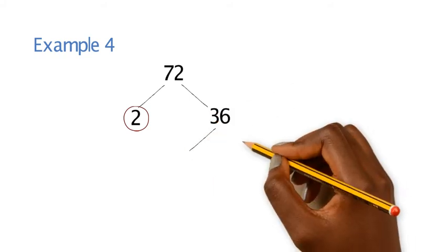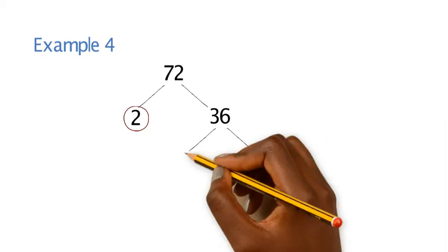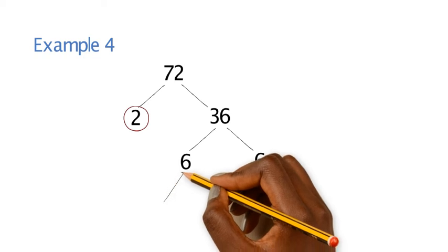Example 4, last example. If you have 72, we can break that down into 2. 2 is a prime number, so we can circle that, and 36. If we break down 36 further, you could have 6 times 6, but then again we need to break down the 6's further.